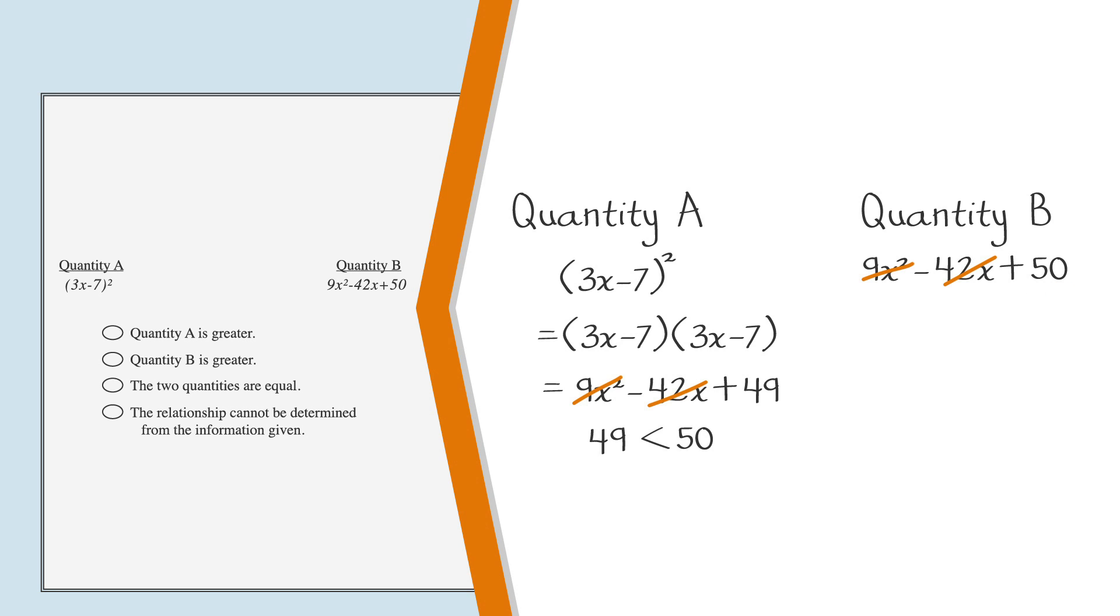That leaves us with 49 in column A and 50 in column B. Clearly, since 49 is smaller than 50, quantity B is larger. The second choice is the answer.